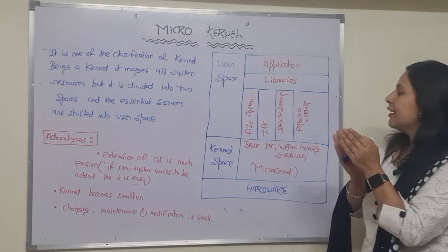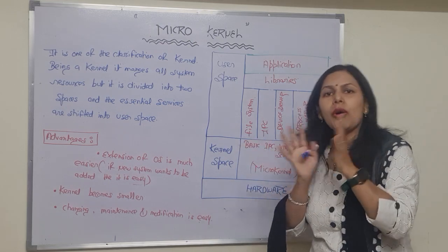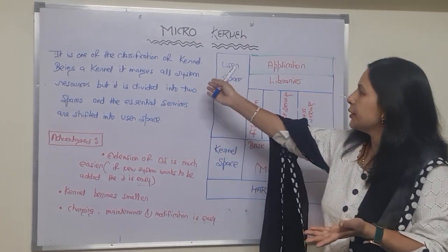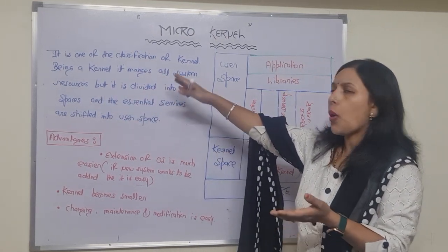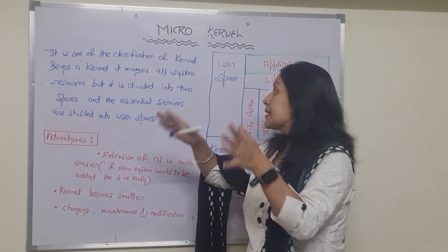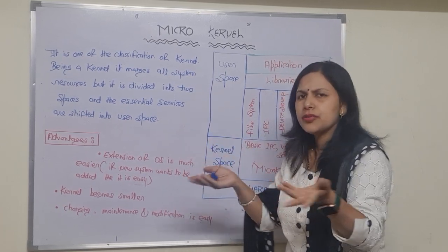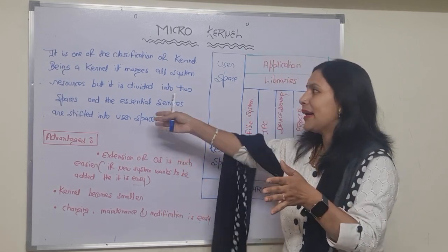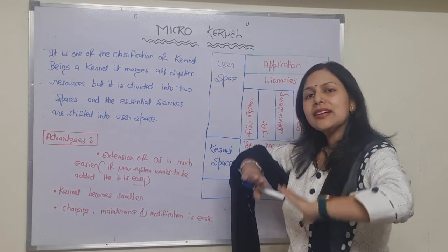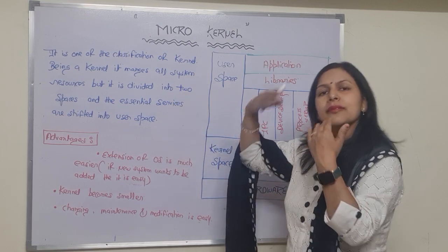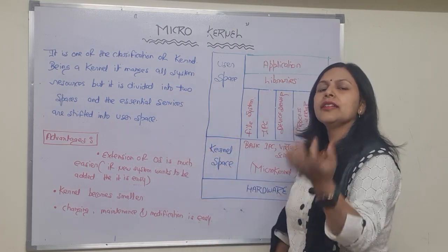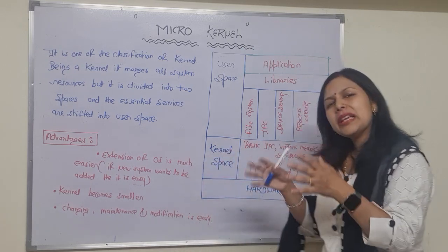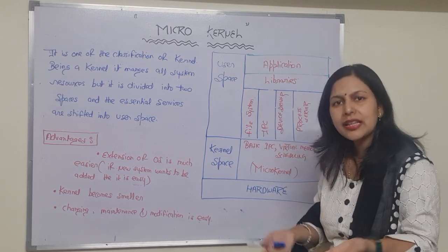That is why we say that in the case of micro kernel the size is small, making it more compatible. Being a kernel it still manages all the system resources, but it is divided into two spaces — user space and kernel space. All the essential services are shifted into the user space, and only the basic functions of the kernel remain in the kernel space.